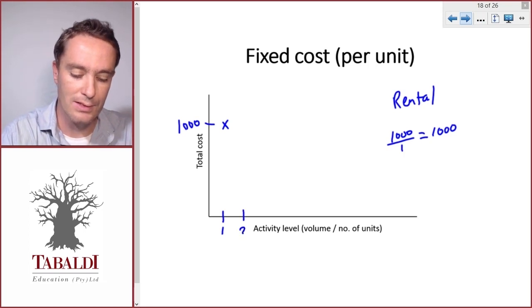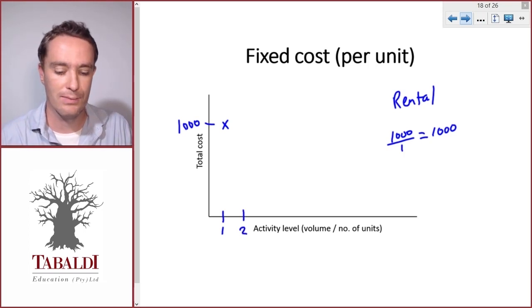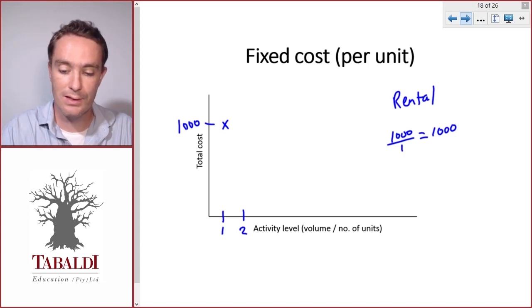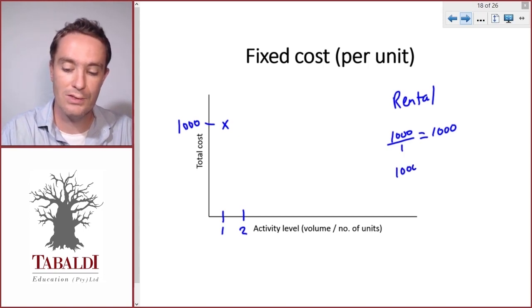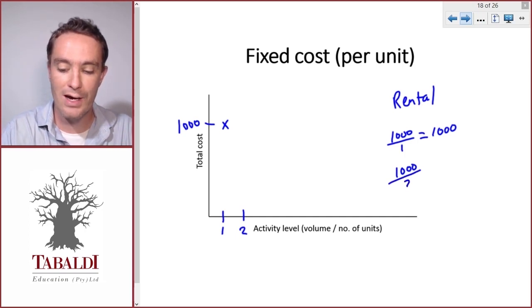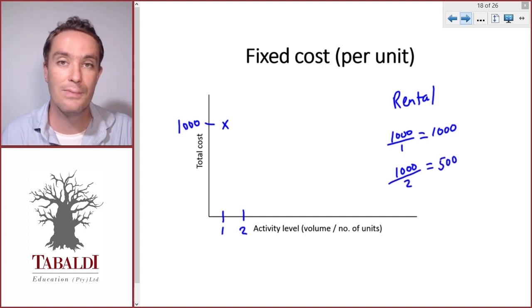Then we make another table the next month, so two tables in the second month. So what will our rental be for the second month? It will be a thousand again because that's what the agreement said, but now we can divide it by two tables, so it's only five hundred per table.